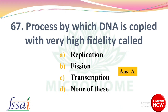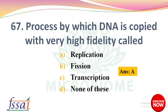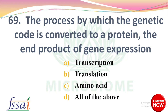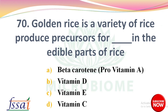The process by which the DNA gene code is read and transferred to messenger RNA is called — options: transcription, translation, replication, all of the above. The right answer: option A, transcription. Next: the process by which the genetic code is converted to a protein, the end product of gene expression — options: transcription, translation, amino acids, all of the above. The right answer: option B, translation.